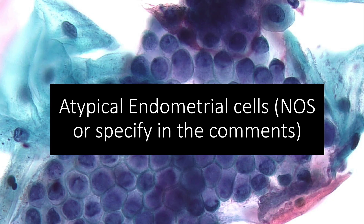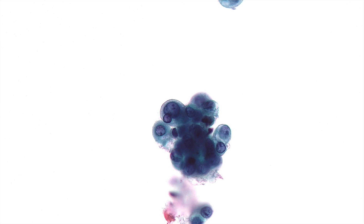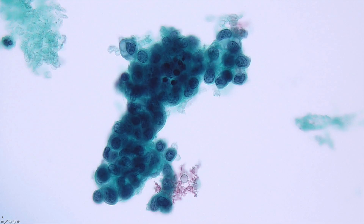Now we'll cover atypical endometrial cells. Distinction of cytologically benign from atypical endometrial cells is based primarily on cell size. Atypical endometrial cells are not designated as favor neoplastic; they are typically present in small groups. These cells show some hyperchromasia and slightly enlarged nuclei with relatively scant cytoplasm and ill-defined cell borders. Cytoplasm can be vacuolated. Atypical endometrial cells can be associated with a variety of intrauterine processes, including polyps, endometritis, hyperplasia, and carcinoma.